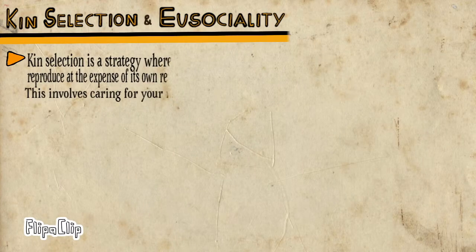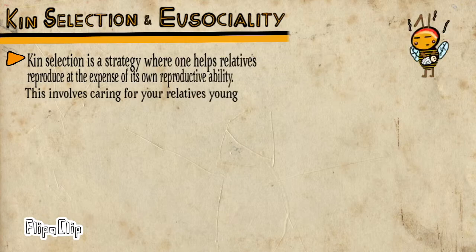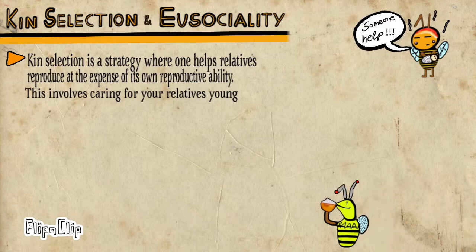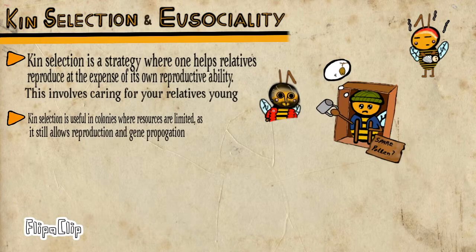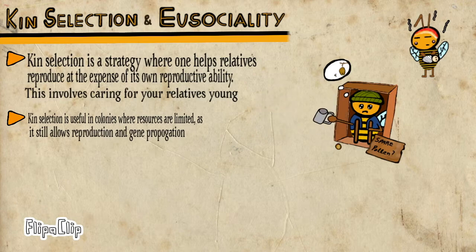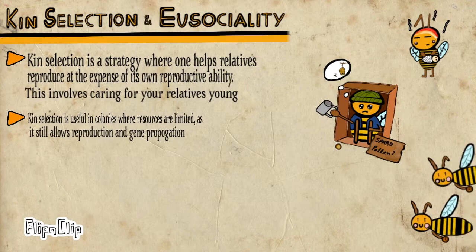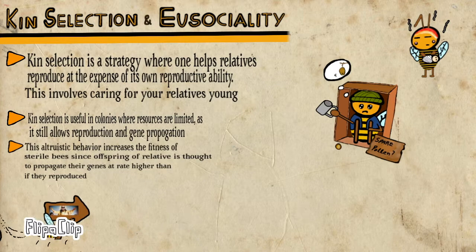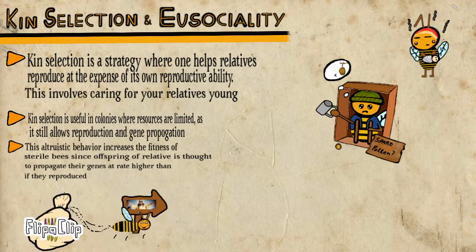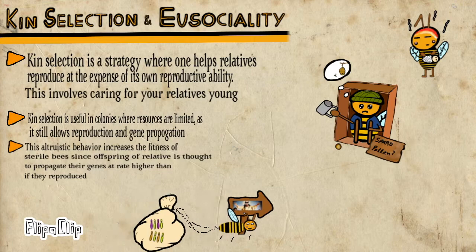Kin selection is an evolutionary strategy where an organism helps relatives reproduce at the expense of its own reproductive ability. This usually involves the altruistic behavior of caring for the young of a relative. This behavior is thought to increase the fitness of non-reproductive individuals since the offspring could propagate their genes at a greater rate than their own offspring would, due to the closer relatedness between siblings. Therefore, kin selection is important in colonies with insufficient resources that limit all females to be reproductive.